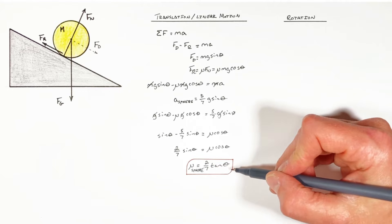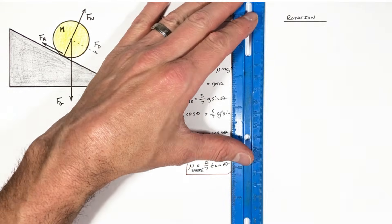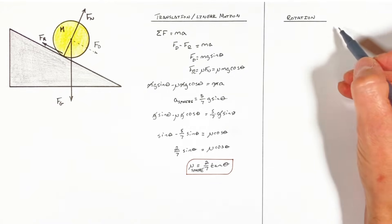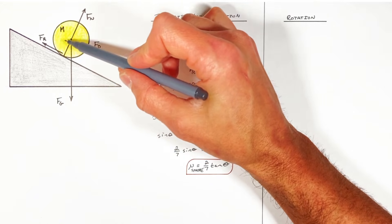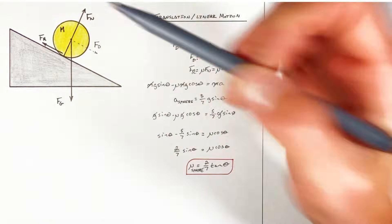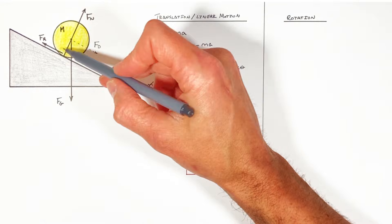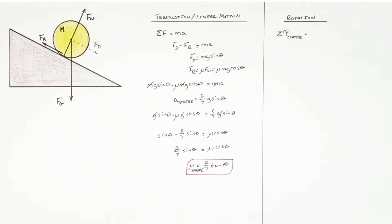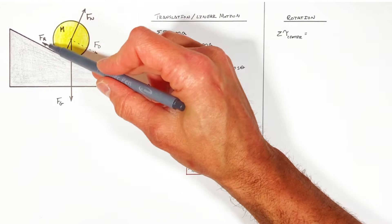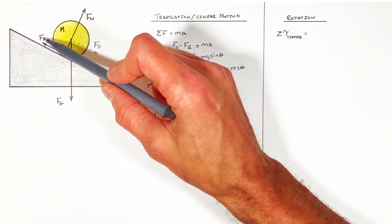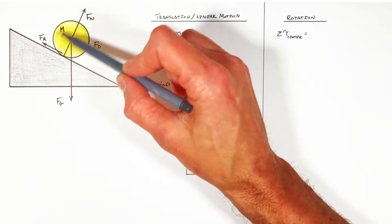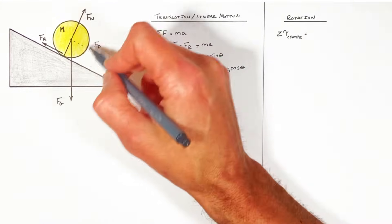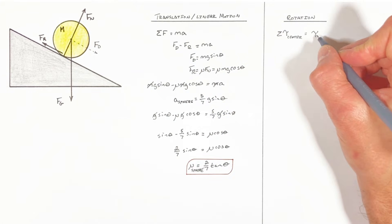Now that we've solved this problem using Newton's second law, let's look at the rotational method of solving for the required coefficient of friction between this rolling object and the hill. To do that, we look at the sum of all torques around the center of this rolling object. There are three forces acting on this rolling object, but only one of them — friction — is actually producing torque on the object as it rolls down the hill. So the sum of all torques is simply the torque by friction.